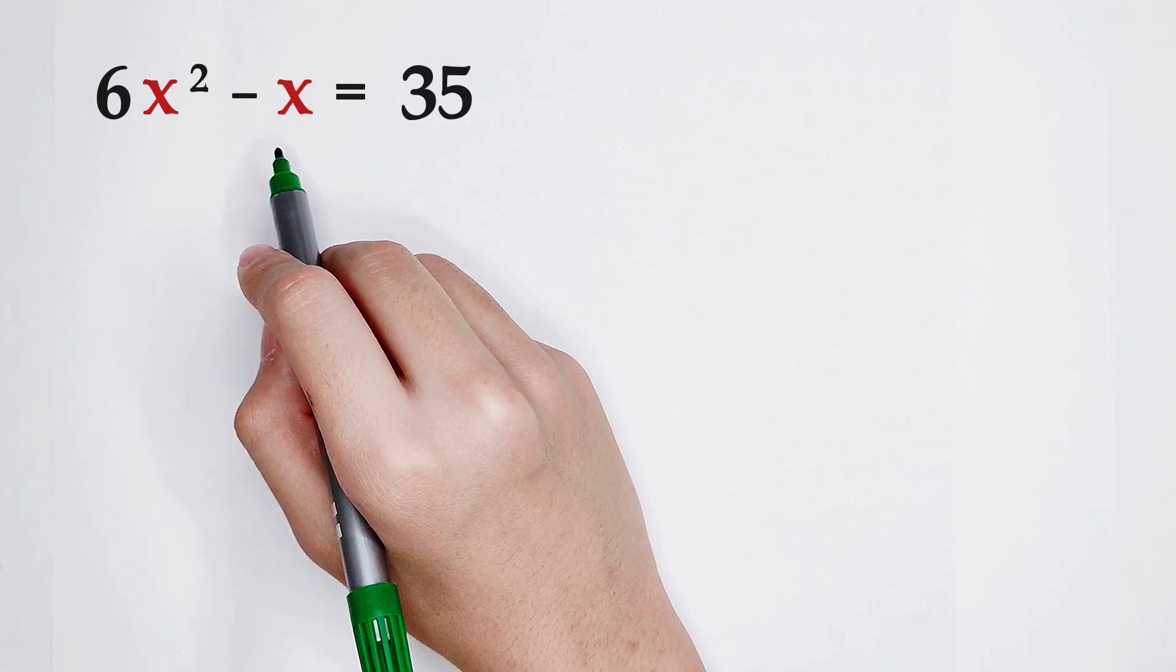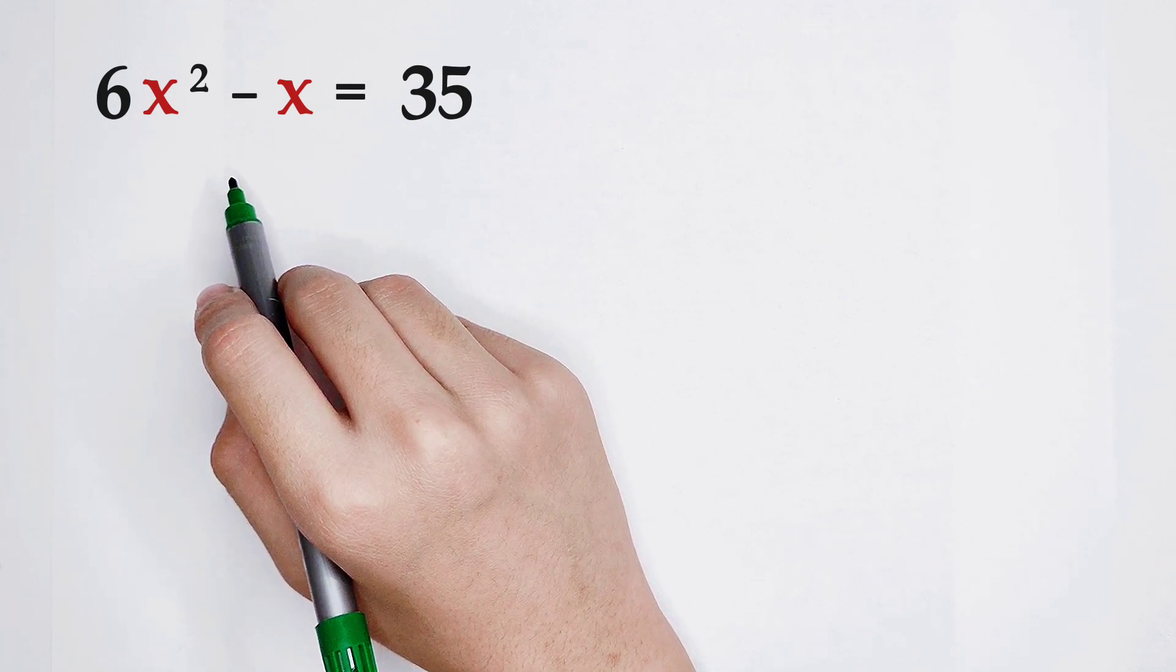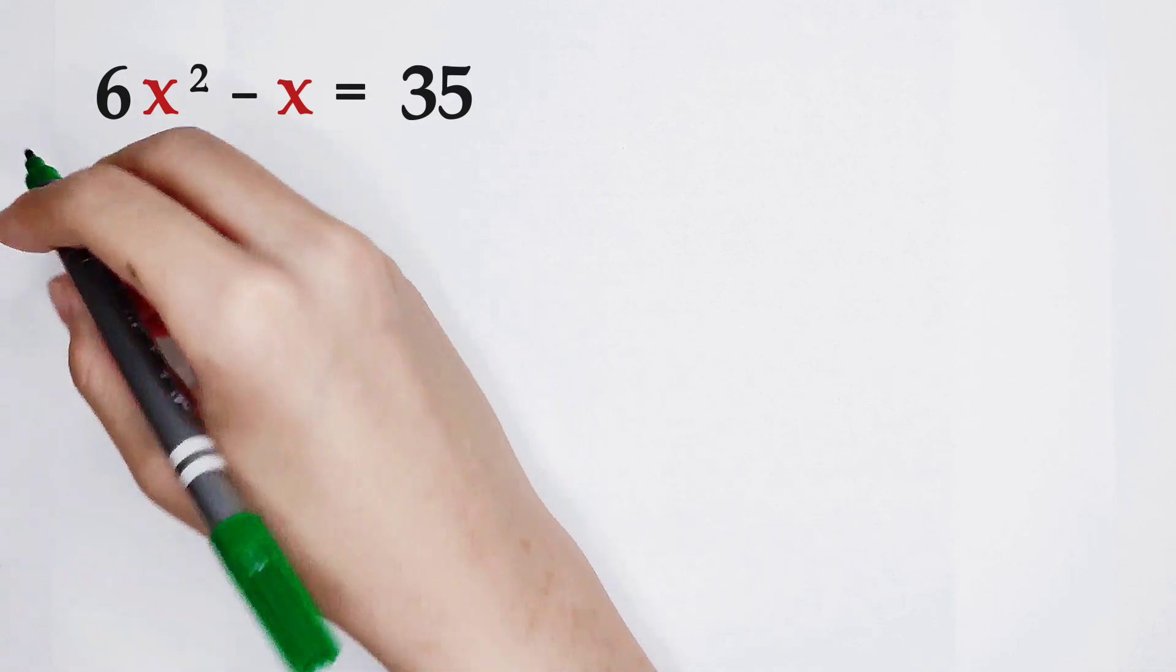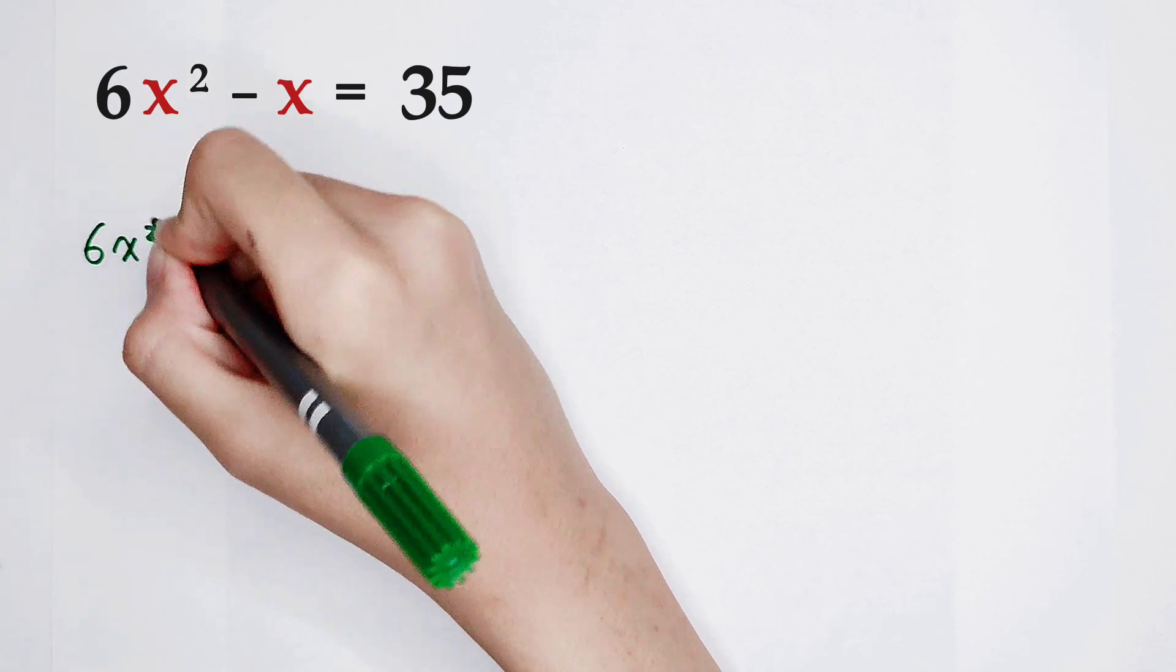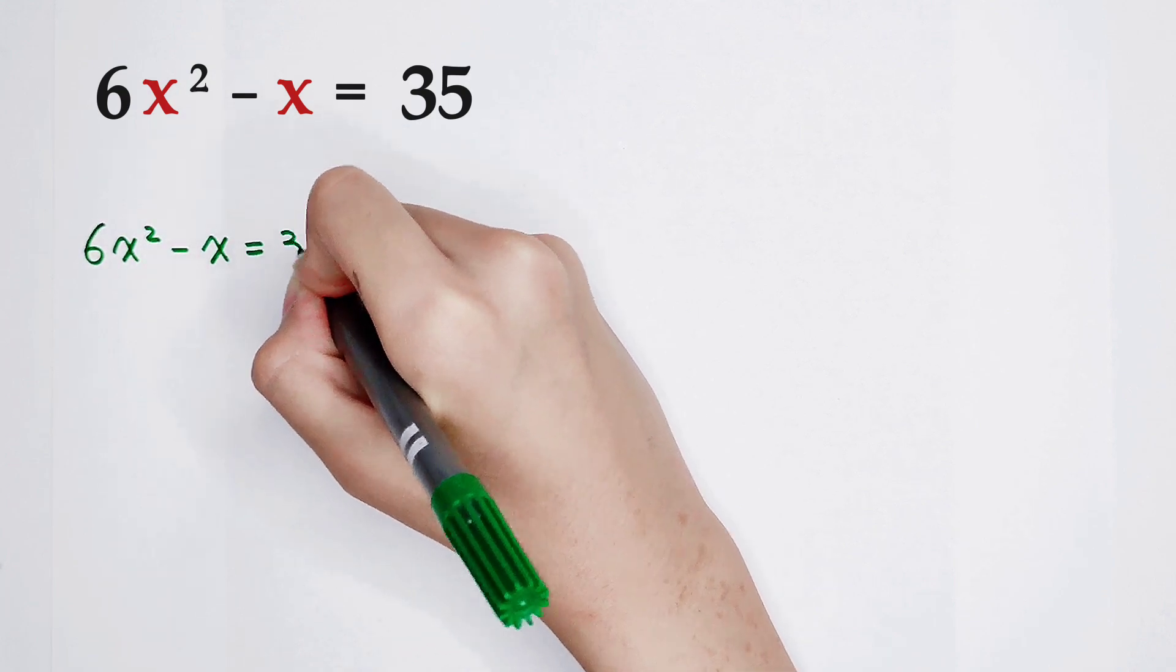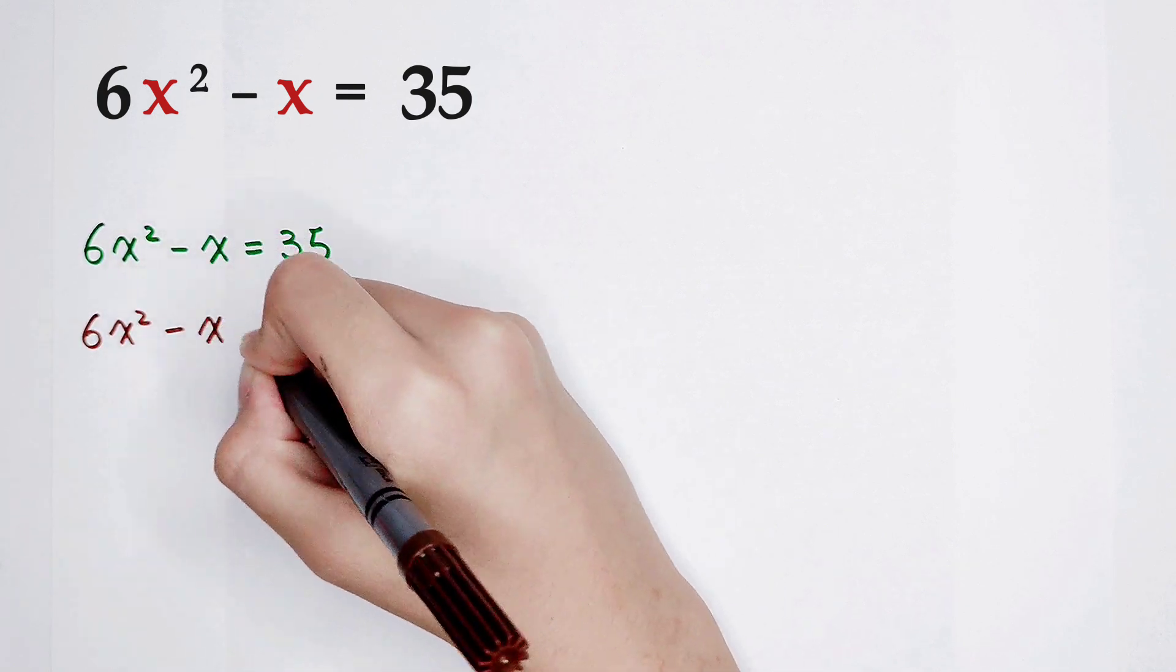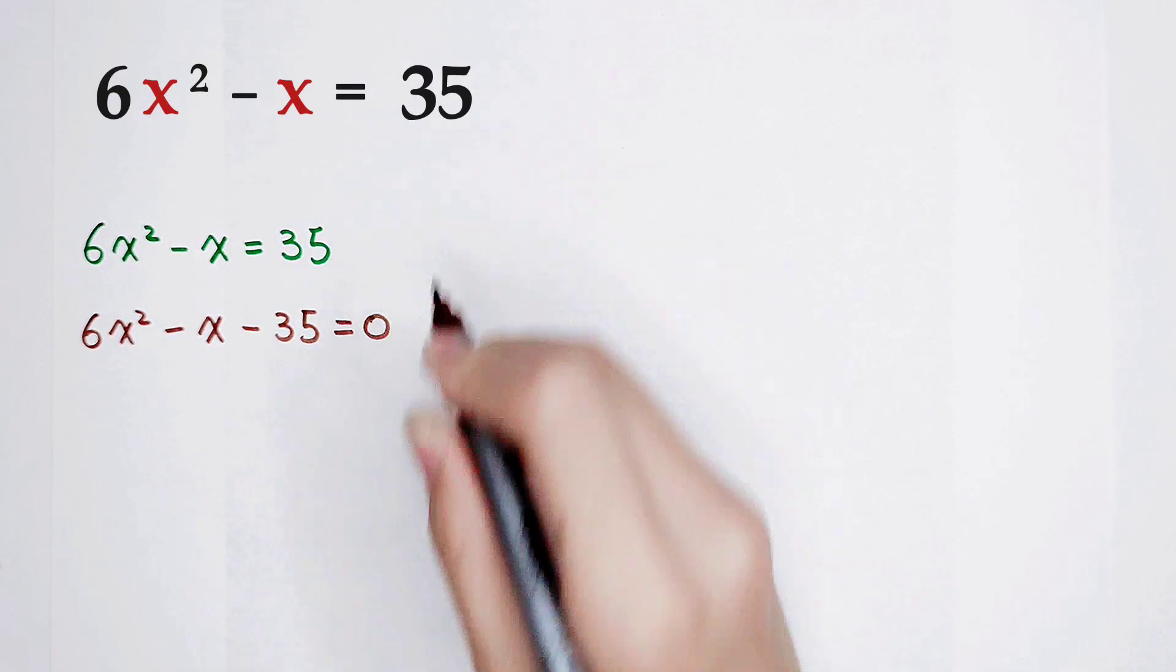First, we move the number which is on the right-hand side to the left-hand side. 35 is on the right-hand side, so move it to the left-hand side. 6 times x squared minus x equals 35. Then 35, move it to the left-hand side, minus 35 equals 0.